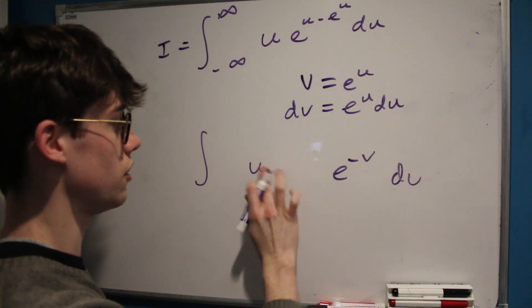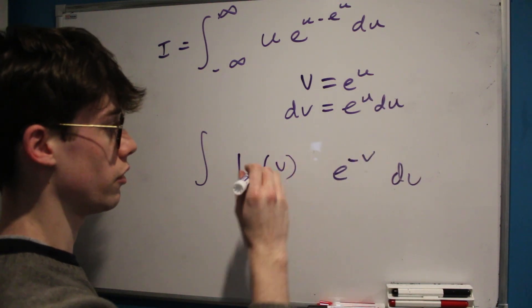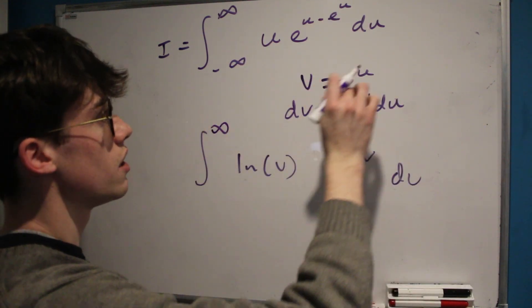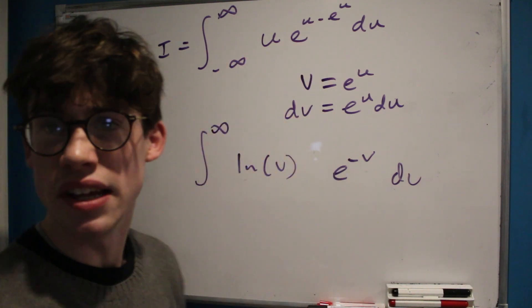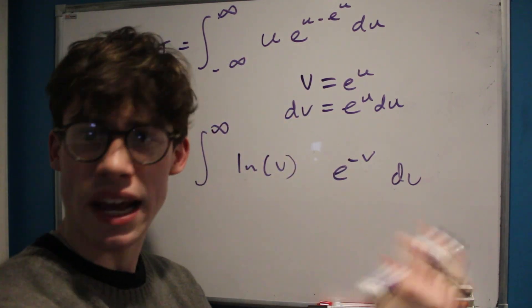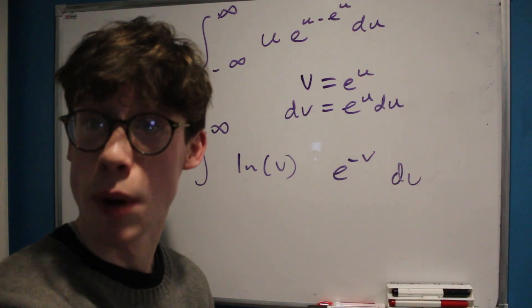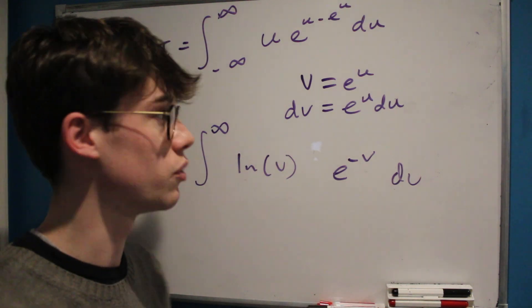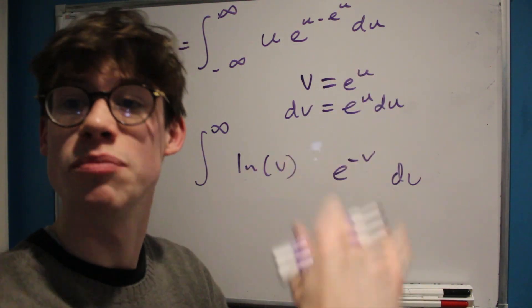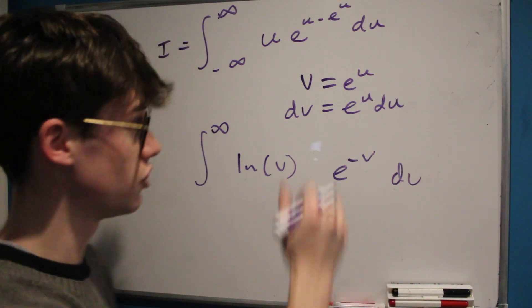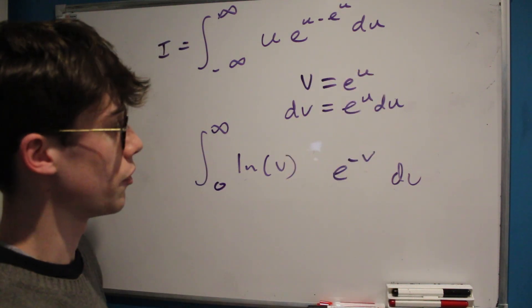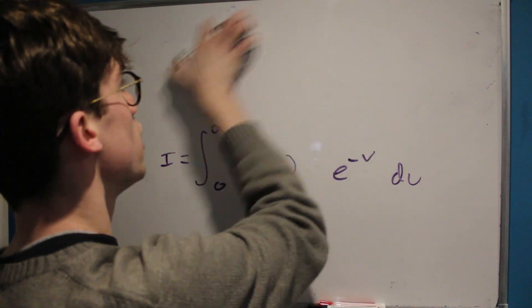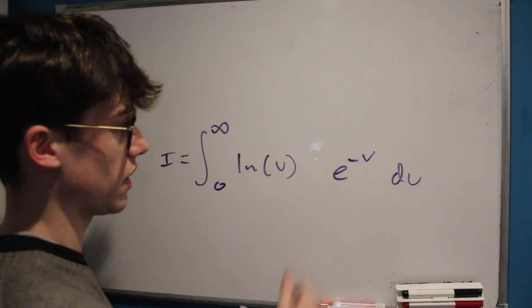If v equals e to the u, then u equals the natural log of v. As u approaches infinity, v will also approach infinity, but as u approaches negative infinity, we're plugging more and more negative numbers into an exponent of e, which means we're dividing one by bigger and bigger numbers — since e to the x never goes below the x-axis, it always approaches zero. So our new integral is the integral from zero to infinity of the natural log of v multiplied by e to the negative v, with respect to v.